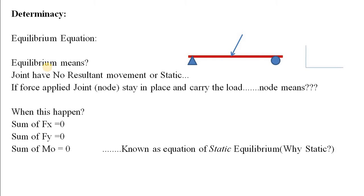Equilibrium means a structure does not move after a load is applied — it is static. For example, consider this beam with two supports and a force applied on it. If this beam is in equilibrium, it means that after application of the load, the beam does not move. When the overall structure is static, each and every joint, support, or node is also in equilibrium.